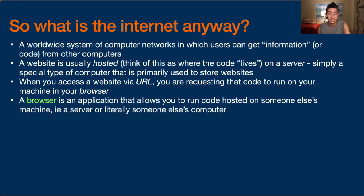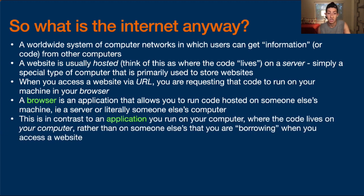A browser is an application that allows you to run code hosted on someone else's machine, i.e. a server or literally someone else's computer. When you access a website, you have the browser on your machine — you have to download the browser, you're using Safari which comes with your Mac. When you access a website, you're actually accessing code that is not on your machine. When you go to google.com, amazon.com, facebook.com, you don't download the code from those websites — it does not live on your computer. You are borrowing that code and it is running in your browser. This is in contrast to an application you run on your computer where the code lives on your computer rather than on someone else's.